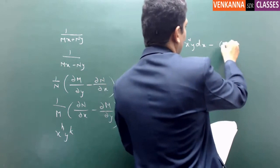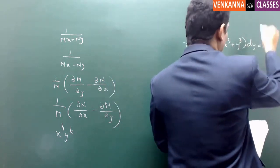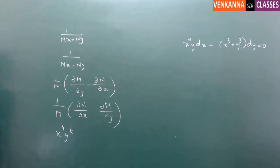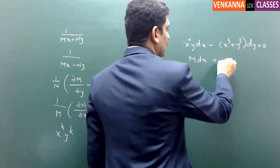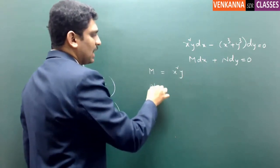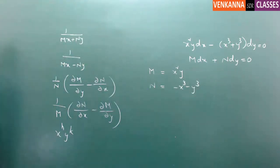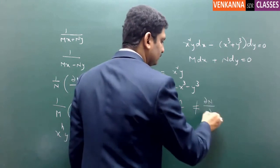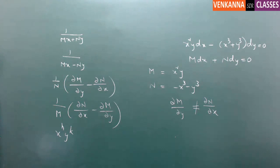Solve the differential equation: x²y dx − (x³ + y³) dy = 0. Comparing with M dx + N dy = 0, we have M = x²y and N = −x³ − y³. This is a non-exact differential equation because ∂M/∂y ≠ ∂N/∂x. We need to evaluate both partial derivatives, confirm they are unequal, and then choose the appropriate formula.